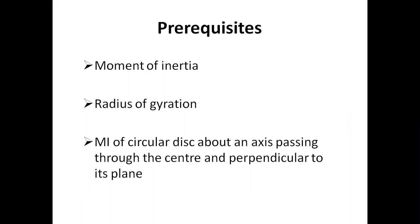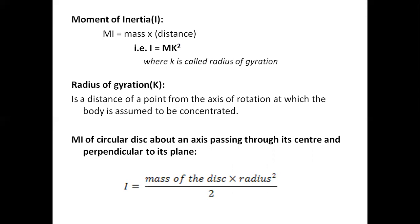Before going into detail for the calculation of moment of inertia for a solid cylinder and then the hollow cylinder, we need to know what is moment of inertia, then radius of gyration, and also the formula for moment of inertia of a circular disk about an axis passing through the center and perpendicular to its plane. Moment of inertia of any rigid body is given by I = mk², where m is the mass of the body and k is the radius of gyration. Radius of gyration is the distance of the point from the axis of rotation at which the entire mass of the body is assumed to be concentrated. The formula for moment of inertia of a circular disk about an axis passing through its center and perpendicular to its plane is I = mR²/2.